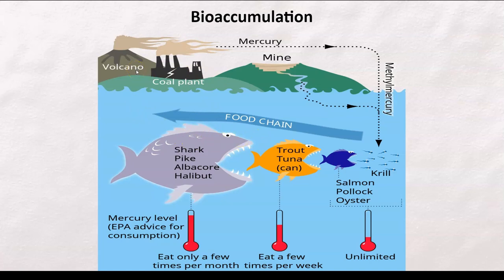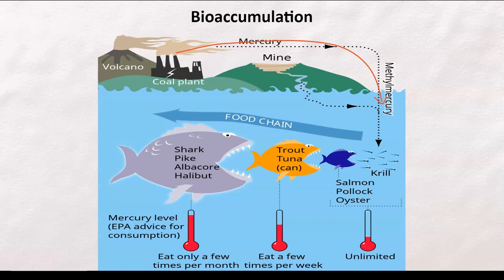The concentration of methylmercury in the top level aquatic predators can reach a level million times higher than the level in the water, which is absolutely crazy. As you can see, methylmercury comes from volcanoes, a coal plant, maybe a mine, the runoff from the mine or the deposition or precipitation goes into the water. The krill eat the methylmercury, the little particles of it. And then the salmon, pollock or oyster will eat the krill. Trout or tuna will eat the salmon, pollock or oyster. And then sharks, pike, albacore, halibut will eat the trout, tuna.